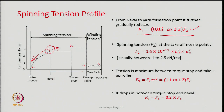The takeoff nozzle, navel, and trumpet are different names for the same element placed at the center of the rotor — the yarn takes a bend and moves out through this element. F2 is the tension value after the navel, accounting for the frictional resistance the yarn experiences while crossing the navel at the bend. Tension is then maximum between the torque stop and the takeoff roller.